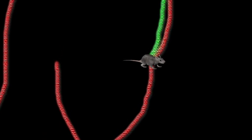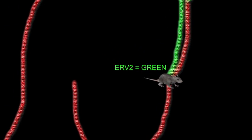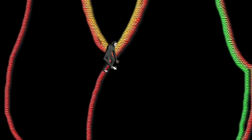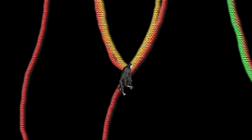Fast forward 30 million years. A small rodent, let's call it Secundus mausus, is the common ancestor of mice and rats, and is infected by a new species-specific retrovirus that becomes endogenous — this is ERV-2. In a different line, Secundus apis, the common ancestor of all great apes, acquires a third retrovirus, ERV-3.